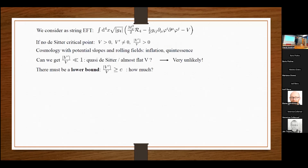Let's turn to potentials and their slope. We come back to this theory and we said that maybe there are no de Sitter critical points — meaning we can have a positive potential but the first derivative doesn't vanish. So probably this ratio V'/V is strictly positive. The question is: can we do cosmology in this situation? In principle yes, because we can have slopes and rolling fields — this is what happens in inflation and quintessence. What is this ratio? Can it be very small? If it's very small, we have a nearly flat positive potential and there's hope to do cosmology.